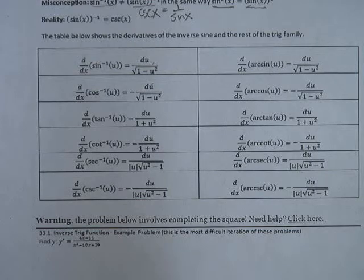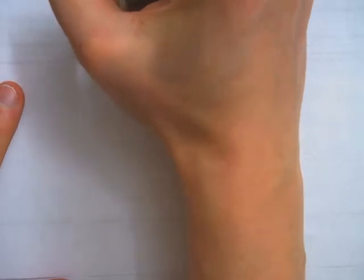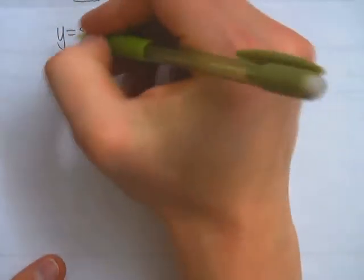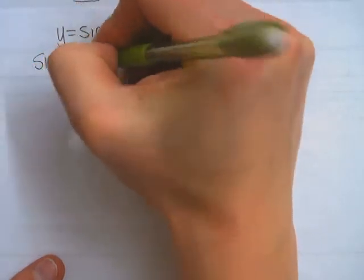So we're going to prove how to actually solve for the derivative of these things for just one of the problems, just for sine. And this is what the proof looks like. So we have some sort of function. I'm going to do the most basic inverse trig function: y is equal to the inverse sine of x. All right, first step is to sine both sides. It gets rid of the inverse sine. So I get sine of y is equal to x.